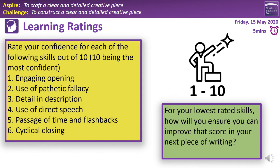For the final part of our creative writing unit, rate your confidence for each of the following skills, scoring each out of 10 — 10 being completely confident, zero meaning you have no idea what it even is. Write scores one to six down the side of your notebook. Skill one: engaging opening — can you write an effective narrative hook or moody, atmospheric piece? Skill two: use of pathetic fallacy — can you use weather to create mood?